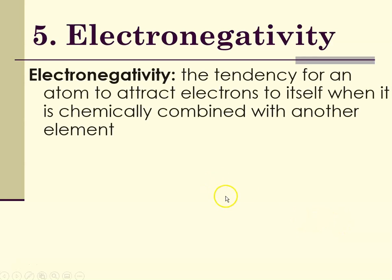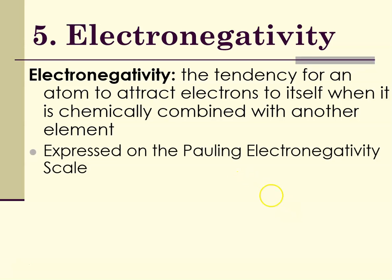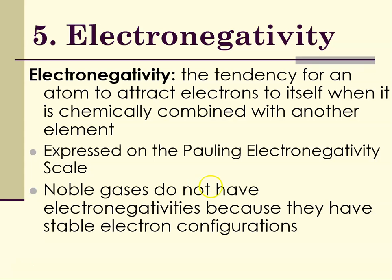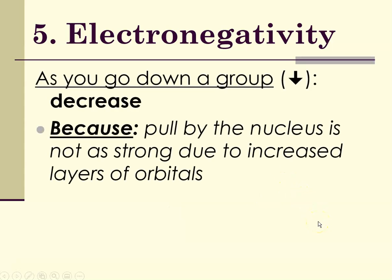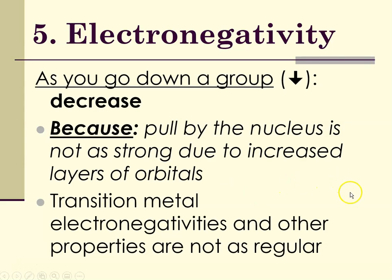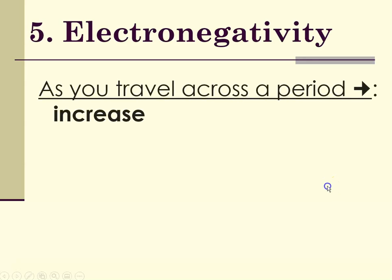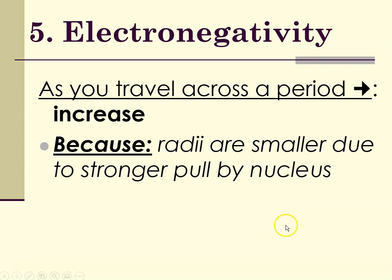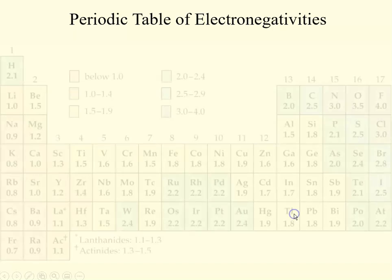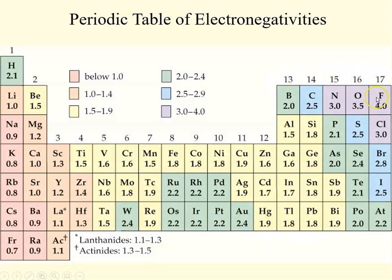Electronegativity is the tendency for an atom to attract electrons to itself when it is combining chemically with another element. It's expressed on the Pauling electronegativity scale, and noble gases do not have electronegativity because they have stable electron configurations. As you go down a group, electronegativity decreases because the pull of the nucleus is not as strong due to shielding. With transition metals, electronegativities and other properties are not quite as regular. As you travel across a period, electronegativity increases because of increased nuclear charge as the radii decrease. Fluorine is the most electronegative element on the periodic table, and the least electronegative would be exactly opposite — francium.